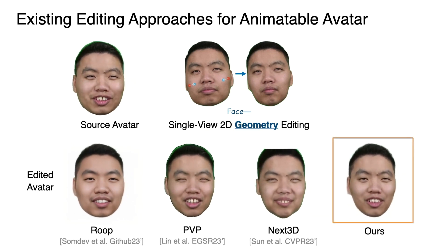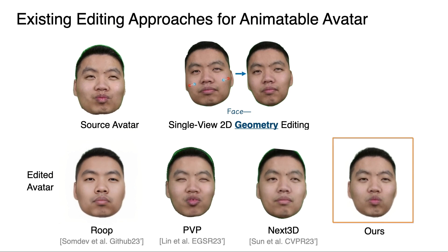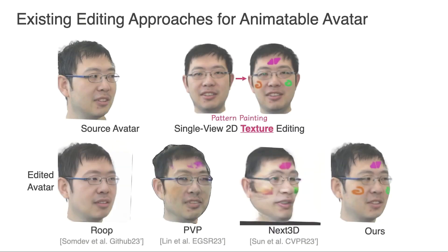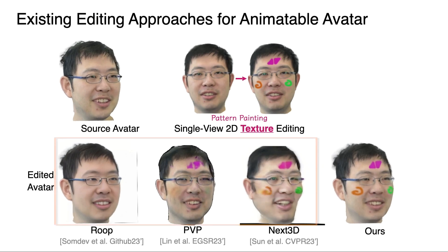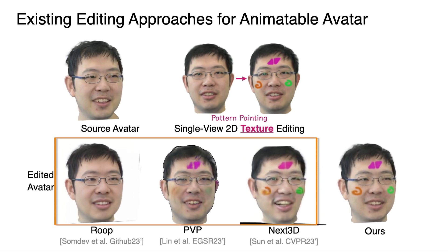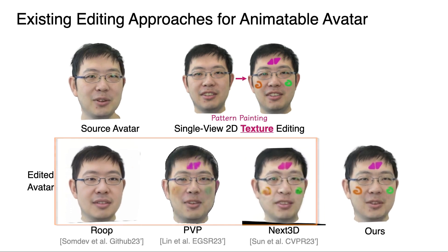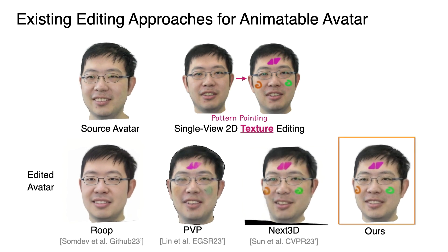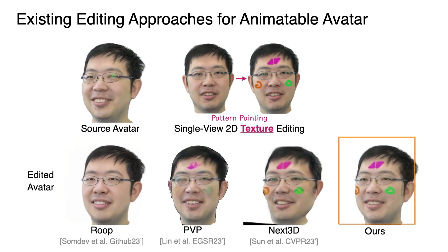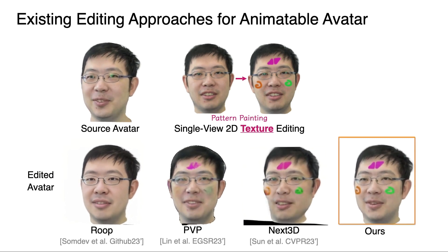In contrast, our results are consistent with the edited image across different expressions and viewpoints. For texture editing, we paint some patterns on the face in a single image. Three other methods suffer from inconsistent pattern painting and identity shifts across expressions and viewpoints. Our method faithfully renders the face with consistent patterns across expressions and viewpoints.